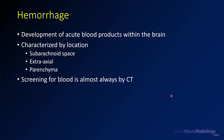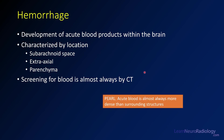The second pathology we're going to talk about is hemorrhage — the development of acute blood products within the brain. We characterize it by location: commonly in the subarachnoid space or CSF, extraaxial such as subdural or epidural hematomas, or in the brain parenchyma itself. Each location has a somewhat different most-common cause. When we screen for hemorrhage, we almost always do it by CT because these patients come in with acute symptoms. Acute blood is almost always more dense than surrounding structures, which on CT is really helpful — you're looking for something that's more dense.